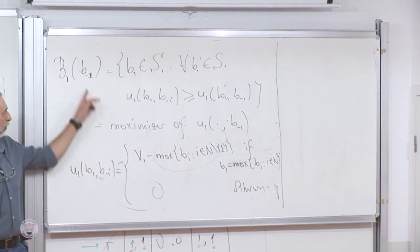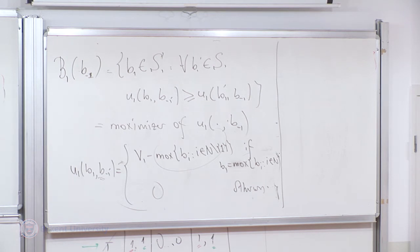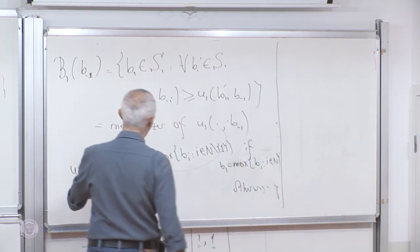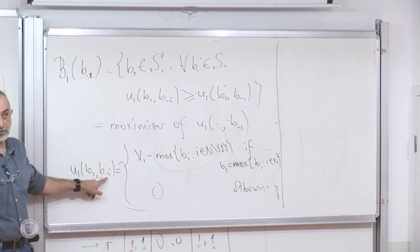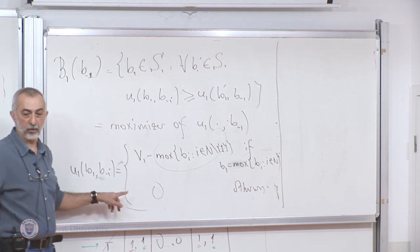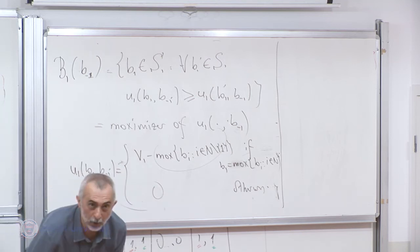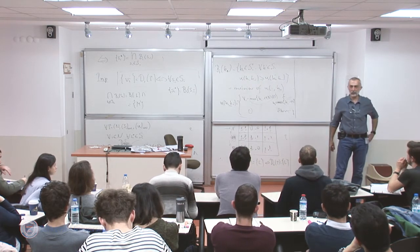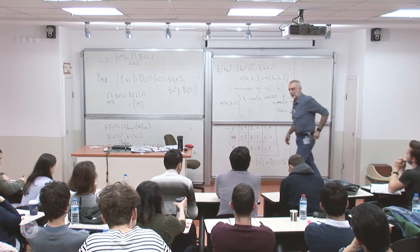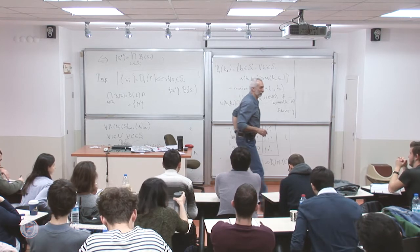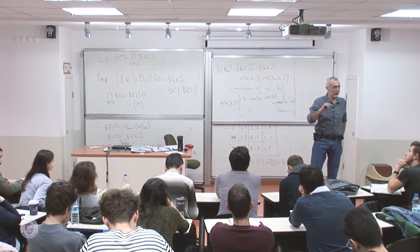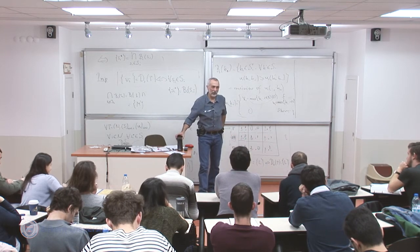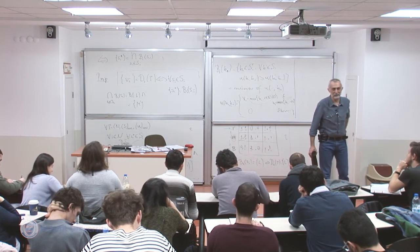So all we have to do is maximize this function. B1 is a real number — actually a non-negative real number — so this is a single-variable maximization problem, something from Calculus 1. What is this set equal to? Your friend claims that B1 maximizes this function no matter what B-minus-1 is. Let's give everybody a couple of minutes to think about it.